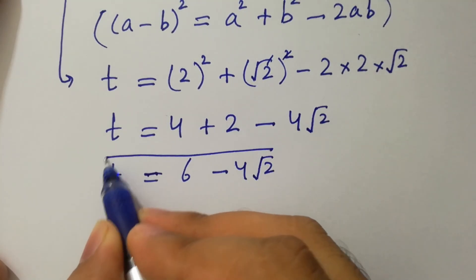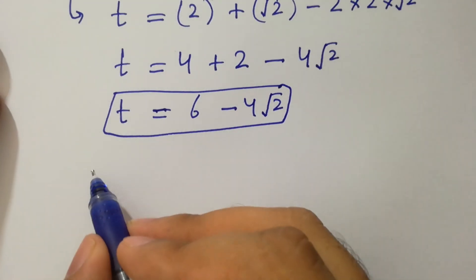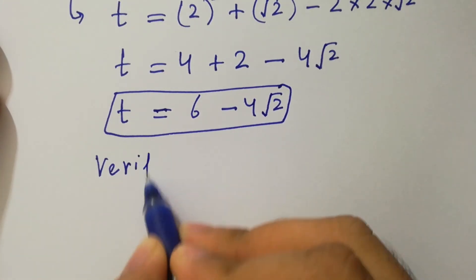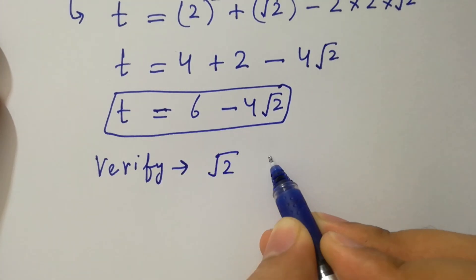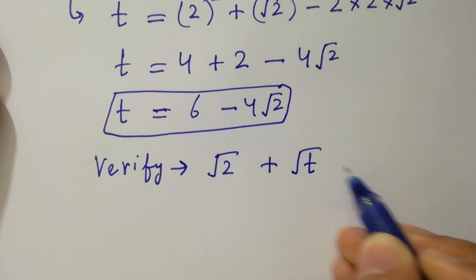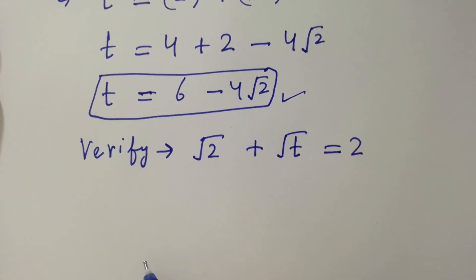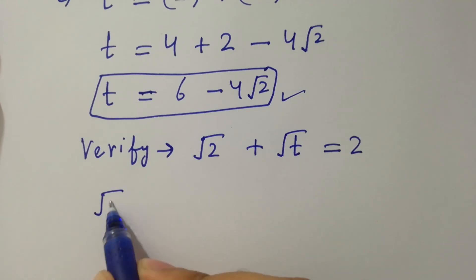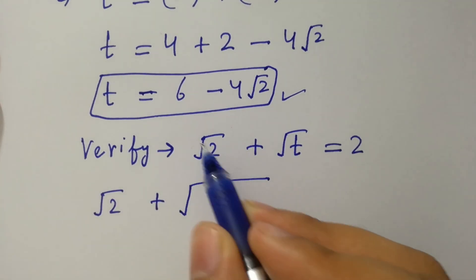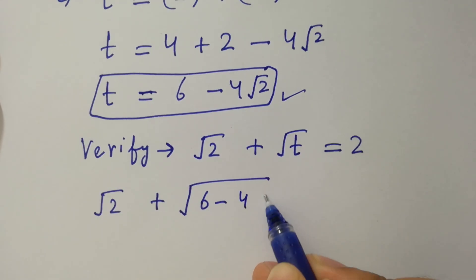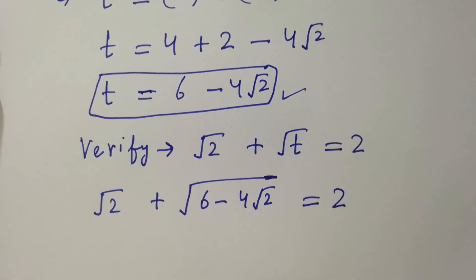That is the value of t. In the next step, I am going to verify: square root of 2 plus square root of t equals 2. Put the value of t — we have square root of 2 plus square root of (6 minus 4 square root of 2) equal to 2.